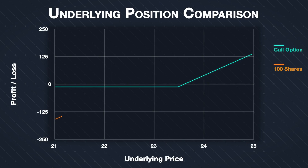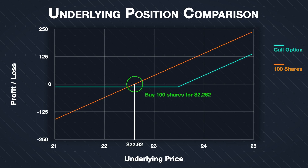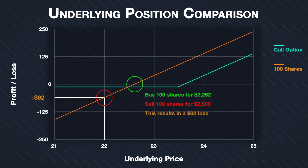We began with a bullish bias and bought the call option, resulting in a loss. But how does this compare to buying the underlying directly? The price of SLV was $22.62 when we purchased the call, so we could have purchased 100 shares for $2,262. By Friday the price had decreased to exactly $22, so those 100 shares would be worth only $2,200 — a loss of $62, considerably more than the $13.14 we lost by purchasing the call. Even using 2x leverage, buying the shares would have required over $1,000 of capital, whereas the call option only required $13.14 — over 80 times less capital.